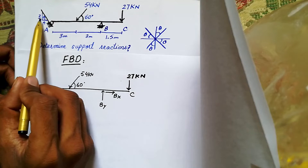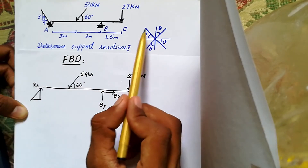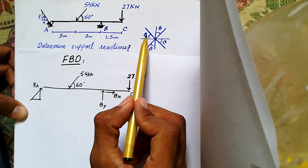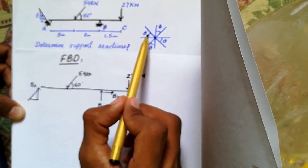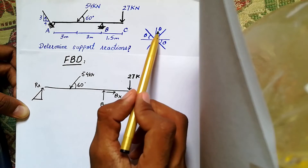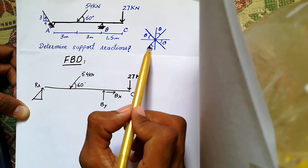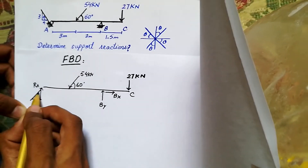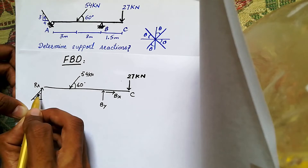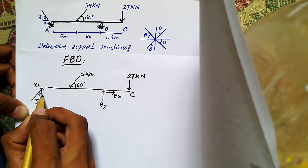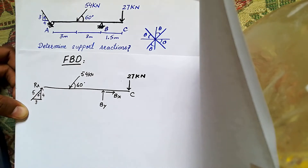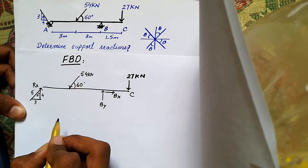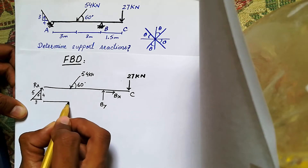We can see that we have angle theta in this example. If we have theta there, it will be the same over there. In front of theta we have 3, and this is 4, so by Pythagoras theorem this would be 5. So we have a 3-4-5 triangle.